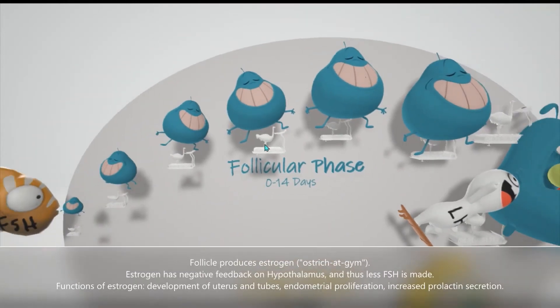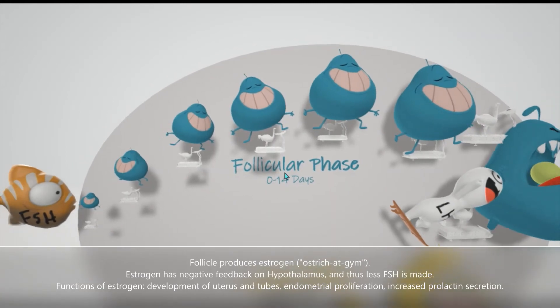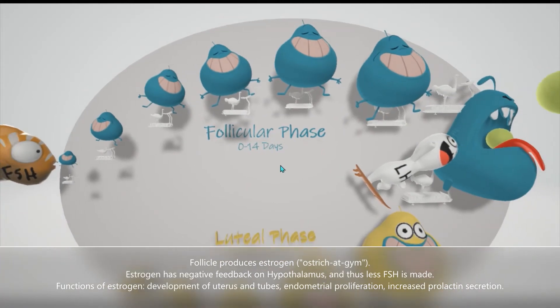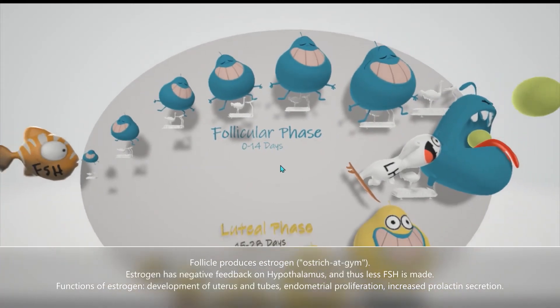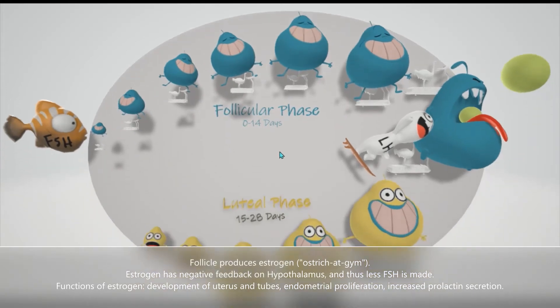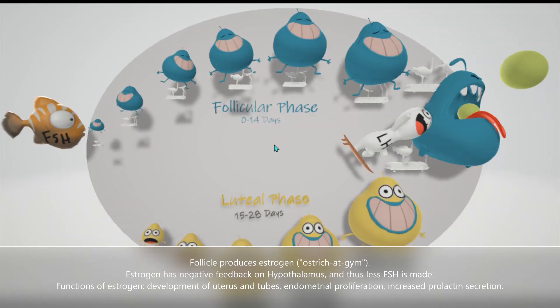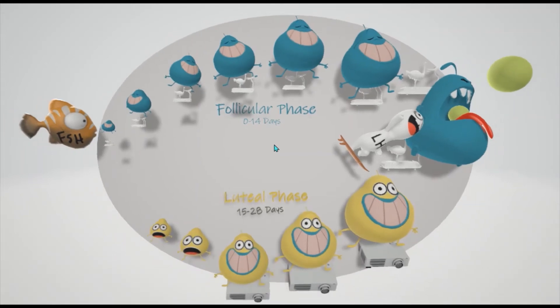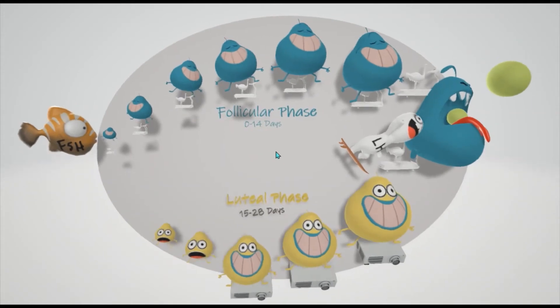Estrogen has a negative effect on the production of FSH. Negative feedback on FSH, that's why FSH levels go down. But estrogen is also very important for growing the lining of the uterus and for increasing prolactin, so the breasts grow during this phase. The uterus lining grows and the tubes grow. Estrogen is really important. As the follicle grows, it produces more and more estrogen.